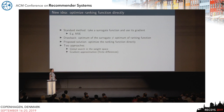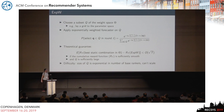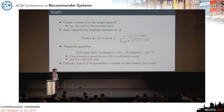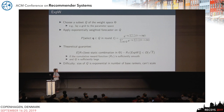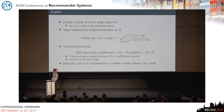We use two approaches: global optimization and gradient approximation. The first method is ExpV, a global optimization method. In ExpV, we choose a subset of the parameter space — consider laying a grid — and then apply an exponentially-weighted forecaster on the grid. The exponentially-weighted forecaster is a randomized algorithm; the denominator contains the cumulative reward, and the higher the cumulative reward of a point, the higher its probability. Its regret is over the square root of the number of rounds, provided that the cumulative ranking function is sufficiently smooth and the grid is sufficiently large.